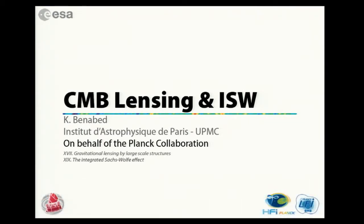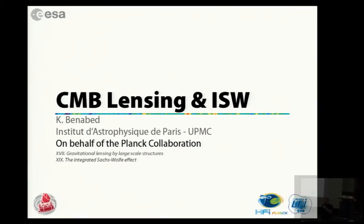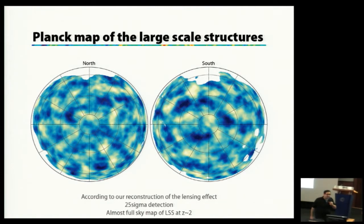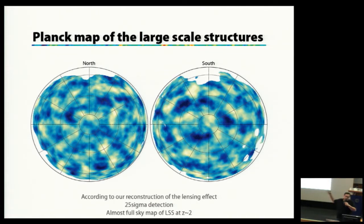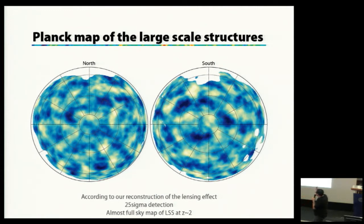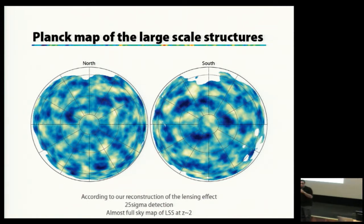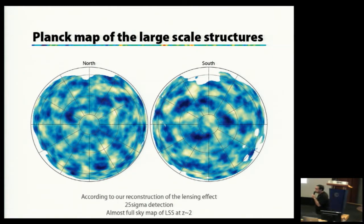We've seen a lot today the Planck CMB map, and I want to start with some very different maps. If I need to summarize my talk in two slides, it's going to be this slide and the next — maps of the large-scale structures as seen by Planck. Planck not only sees the large-scale structure at the last scattering surface but is also sensitive to large-scale structures through the weak lensing effect. What I'm showing you is a reconstruction of the distribution of matter in the universe at redshift about two, extracted from the Planck CMB data — a 25-sigma detection, a full-sky map of large-scale structure.